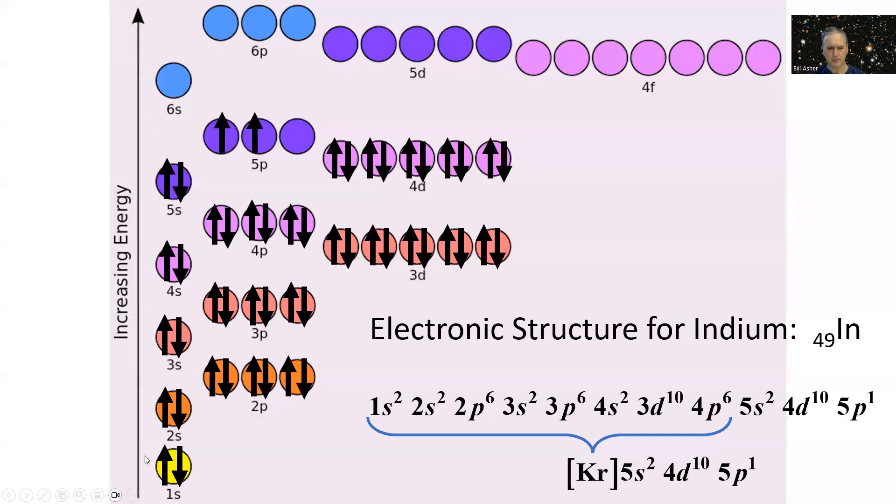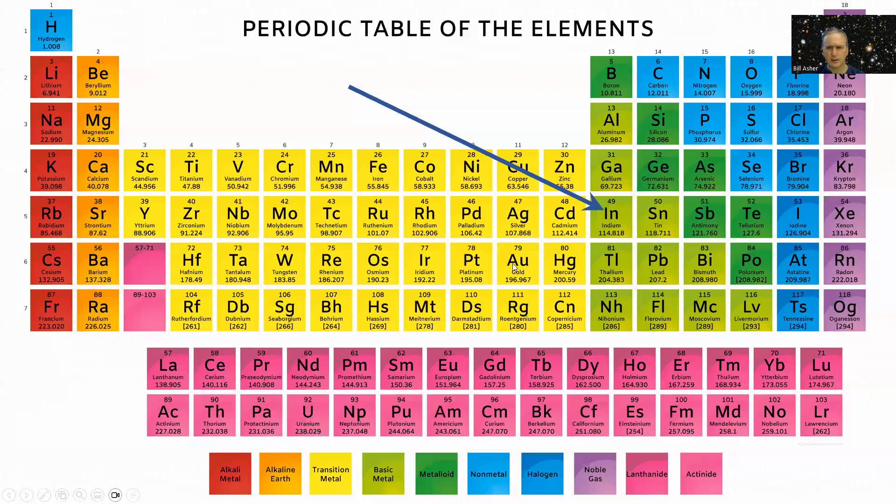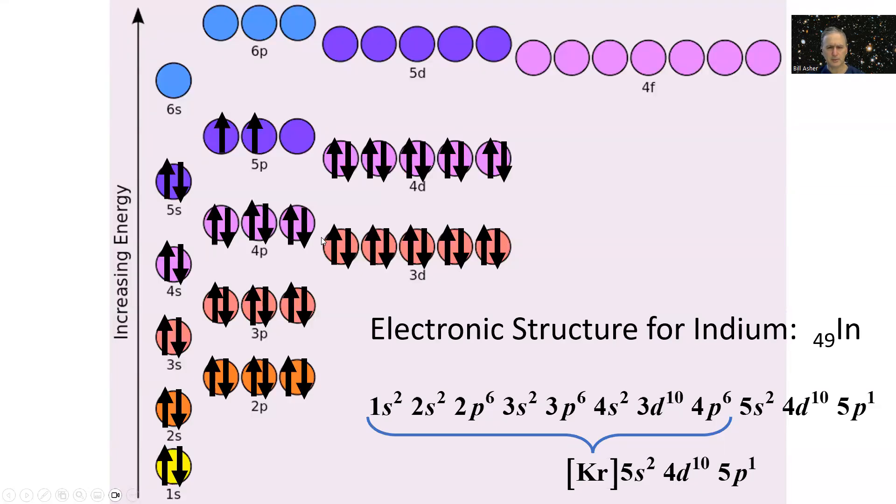Maybe I miscounted somewhere. What did I not do? I'm not counting something right. Oh, there's just one too many electrons here. Indium has only got one electron in the p orbital. See, I wrote it right here, but I didn't write it here, so I need to correct that. There's only one electron in the p orbital, and indium does have 49.